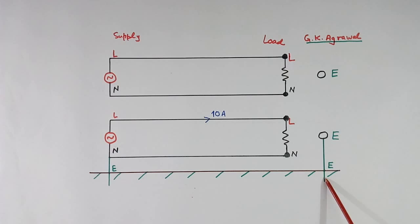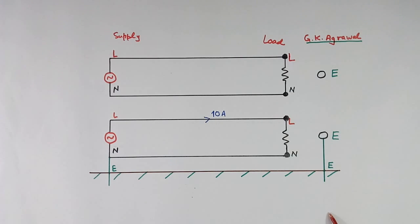This earth connection is made by going 8 to 10 feet inside the earth, and using a copper plate, some pipes and charcoals.